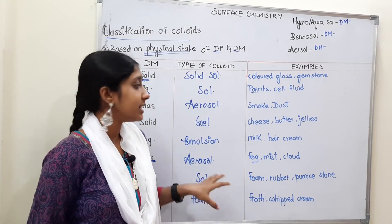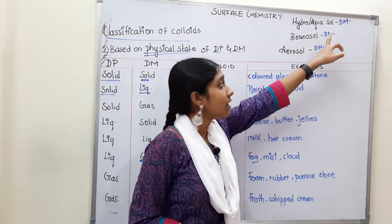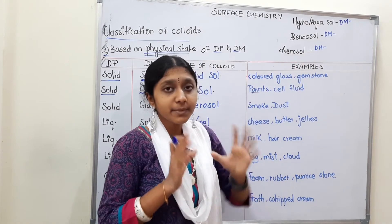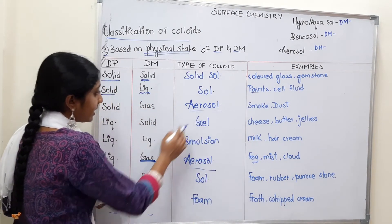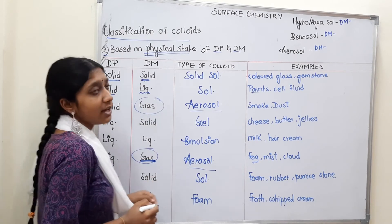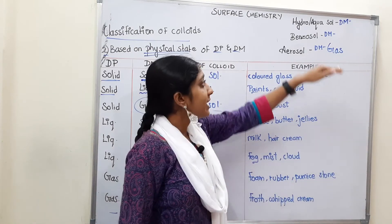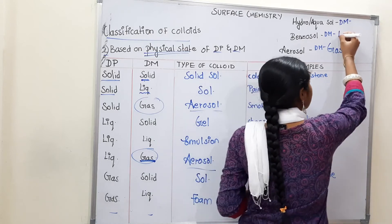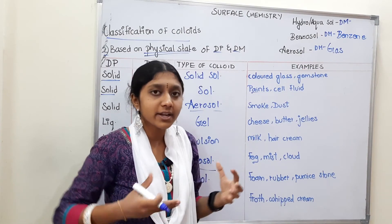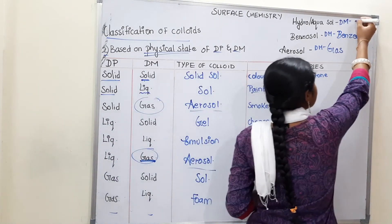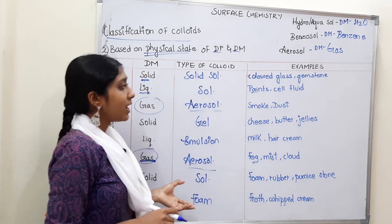One more important classification: based on the dispersion medium, colloids are named as Aerosol (dispersion medium is gas), Benzosol (dispersion medium is benzene), and Hydrosol or Aquasol (dispersion medium is water, H₂O).